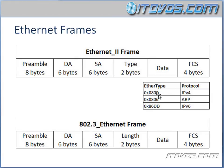Here are some common Ether types — there are a lot of them. 0x0800 — the 0x in front just means this is in hexadecimal format — is IP version 4. 0x0806 is ARP. 0x86DD is IP version 6. Those are some common Ether types. We don't have to memorize those; it's just kind of nice to see them.